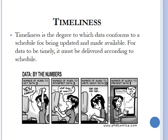Timeliness is the degree to which data conforms to a schedule for being updated and made available. For data to be timely, it must be delivered according to schedule. An example: if a client submits a new proof of address, it is expected that within a particular timeframe the business will update the existing residential address so that communication goes out to the correct address. If the company does not act within a timely manner to update the record, then the data is considered poor quality due to missing the particular timeline.